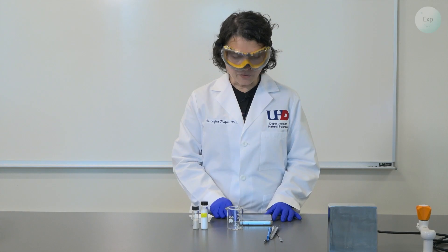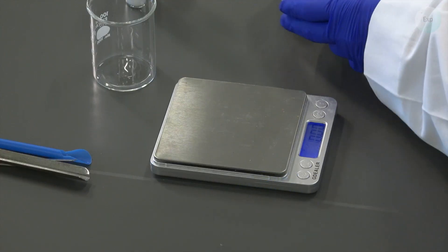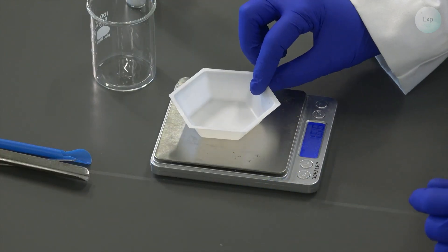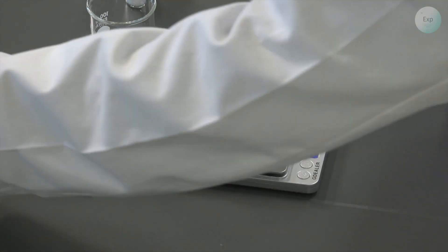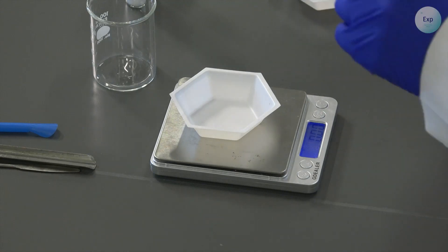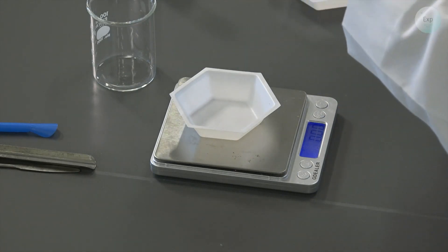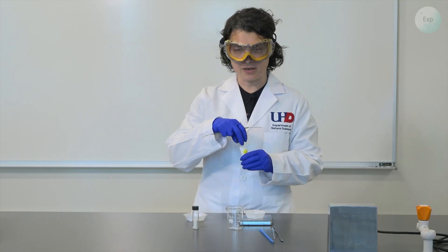So let's begin. First, we turn on our scale, then we place our first weighing boat on top of it and we tare. Then we take our spatula or scoopula and extract approximately five grams of sodium chloride from our container.